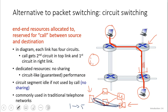This connection is dedicated — exactly like the link between computer A and computer B which is only dedicated to them. Whereas in packet switching, the link is not dedicated; once the packet passes through, it's forgotten and another packet can go through. But in circuit switching there is no sharing of data between links.